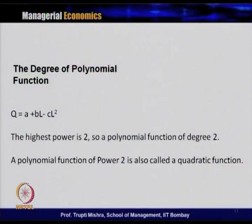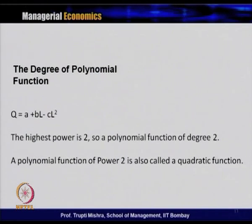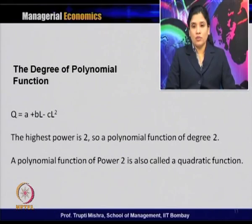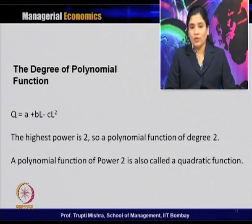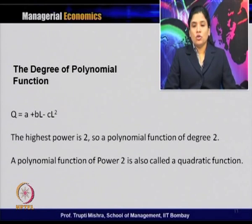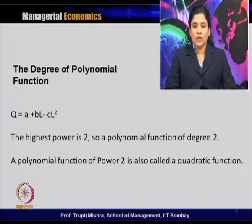To find the degree of a polynomial function: take Q = A + BL − CL² — the highest power is 2, so this is a polynomial function of degree 2, also called a quadratic function. The degree is always identified by the highest power in the functional form. So a polynomial function of degree 2 is called a quadratic function.